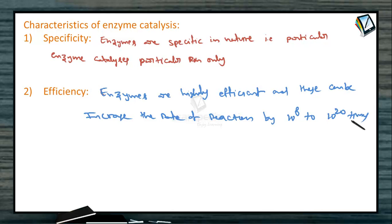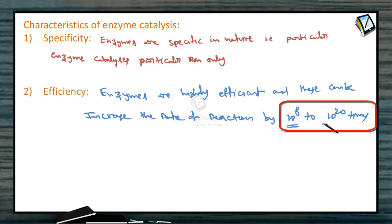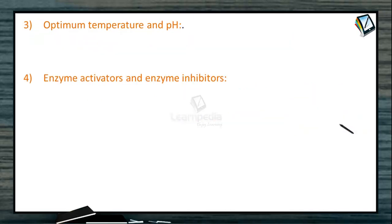Take a simple example from our digestive system. To digest one plate of meals without any enzymes would take 50 years. But in the presence of all the enzymes in our digestive system, the meal will be digested within 3 to 4 hours. This means the rate of reaction is increased in the presence of enzymes by approximately 10 to the power of 8 to 10 to the power of 20 times.